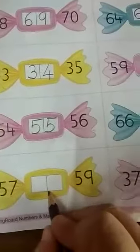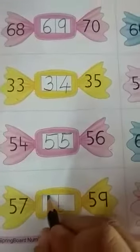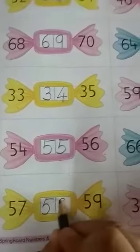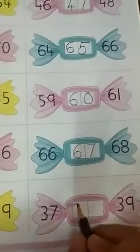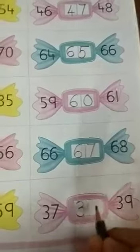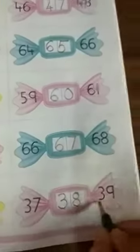Now 57, dash 59. 58, 59. 37, dash 39. 37, 38, and 39. Is that clear children?